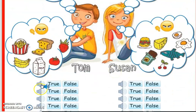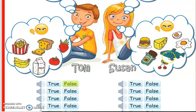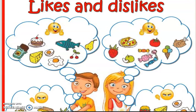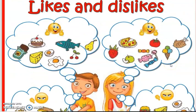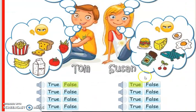To do this worksheet, you click on the listen button and decide whether it's true or false. For example, the very first one: Tom likes milk — is that true or false? Tom doesn't like milk, so it's false. Susan likes pizza — is that correct? Susan likes pizza, so we click true. Susan doesn't like sweets — that's false, because Susan likes sweets. So you can listen and select whether it's true or false.